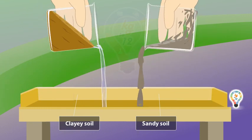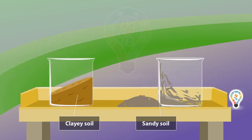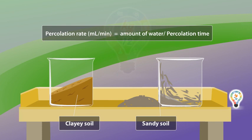For this, formula for calculating the percolation rate: Percolation rate in ml per minute is equal to amount of water divided by percolation time.